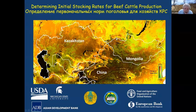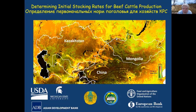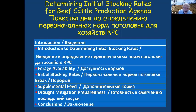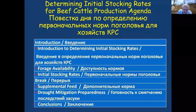Our title today is Determining Initial Stocking Rates for Beef Cattle Production. Here is a quick overview of the sections we'll cover: Introduction to Determining Initial Stocking Rates, Forage Availability, Initial Stocking Rates, Supplemental Feed, Drought Mitigation Preparedness, and Conclusions.